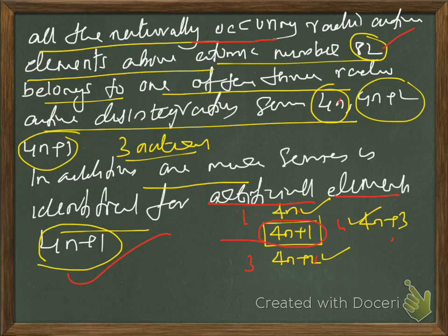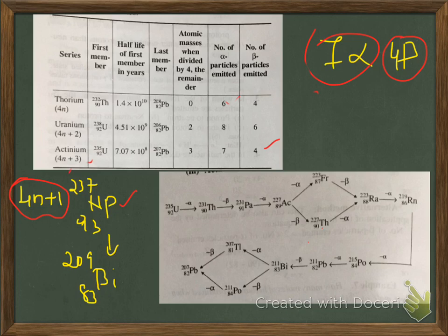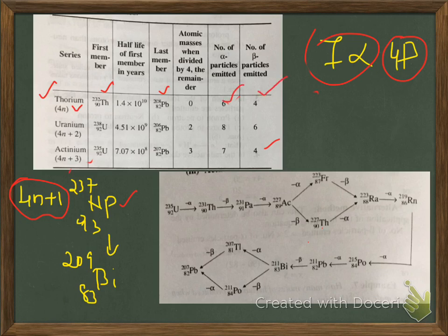Some characteristics of the series can be seen in this table. The three natural series are given in the table. The first is the thorium series, that is the 4n series. It starts with thorium and the final element is lead. During its transition from thorium-232 to lead-208, six alpha particles and four beta particles are emitted.